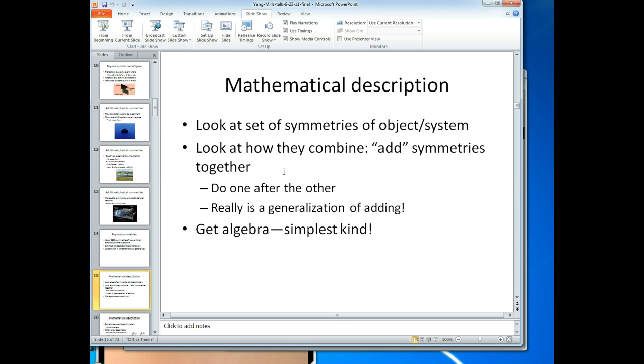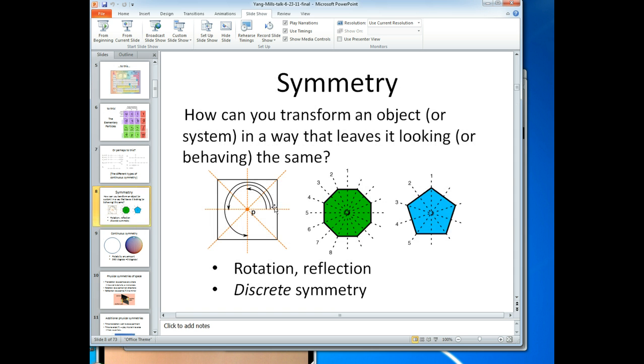You can add symmetries. It might seem funny to use this algebraic word add, but it's very similar to addition—just do one after the other. For example, let's look at this square and rotate by 90 degrees, then rotate by 180 degrees. What does that do in effect? It really is just one rotation by 270 degrees.